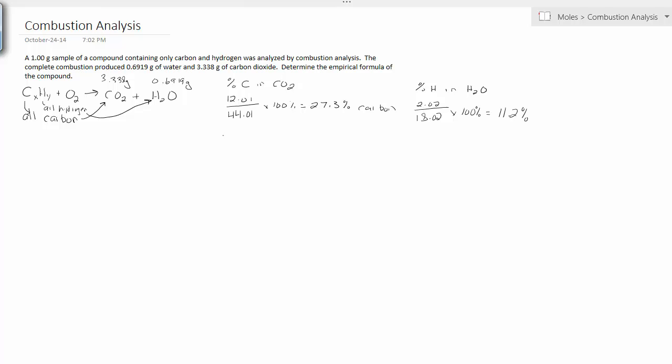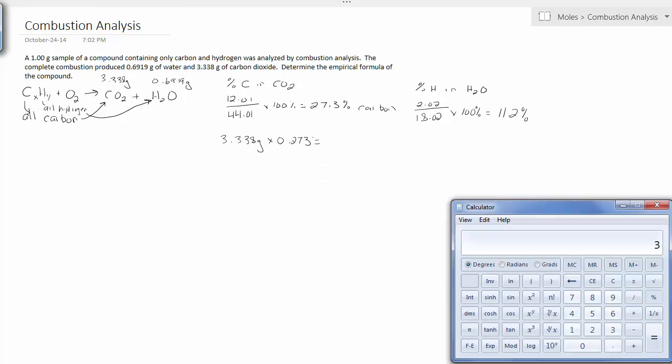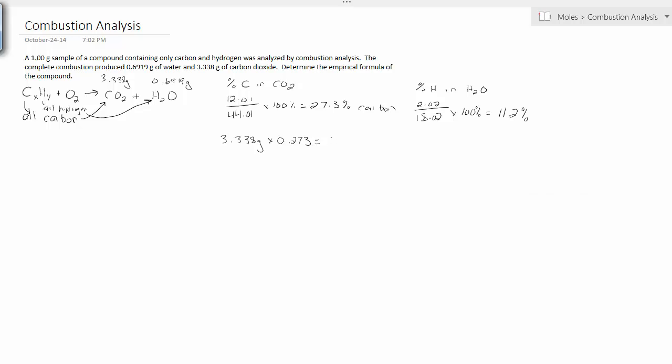So there's 11.2% of water is hydrogen. Now I'm going back to carbon dioxide and asking what is the mass of that 27.3%? So of the 3.338 grams of carbon dioxide, 0.9911 grams was carbon. Now remember, all of this carbon came from the original compound.